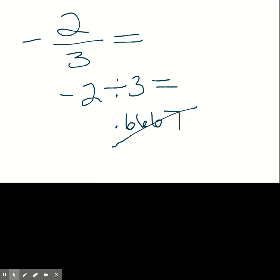This is a repeating decimal. Don't write it like this. This is wrong, wrong, wrong. Instead, just write 0.6 and you're going to put a bar over it to show that it's repeating forever.